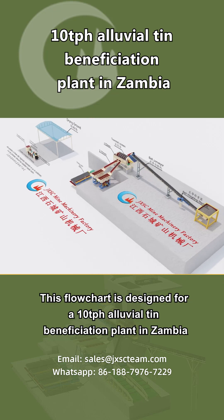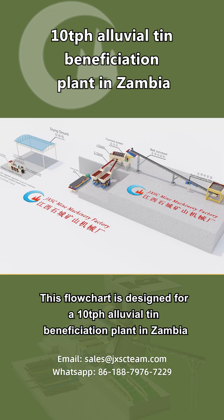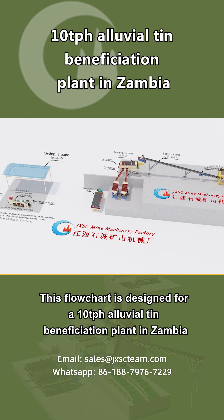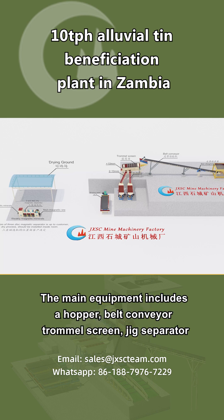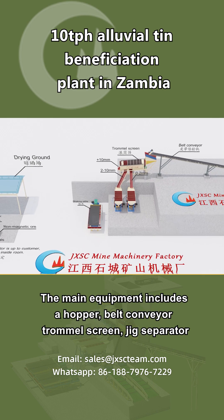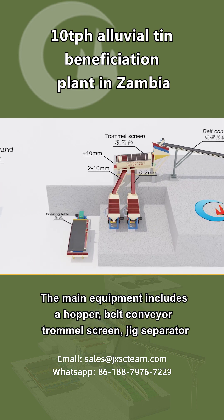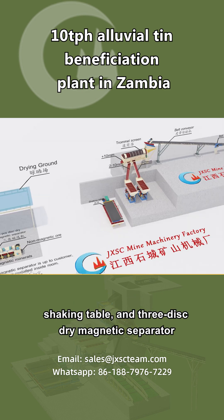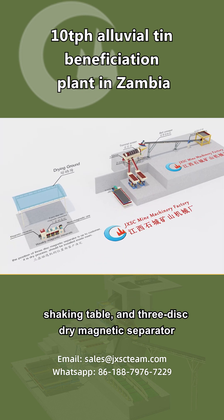This flowchart is designed for a 10 tons per hour alluvial tin beneficiation plant in Zambia. The main equipment includes a hopper, belt conveyor, trommel screen, jig separator, shaking table, and 3-disc dry magnetic separator.